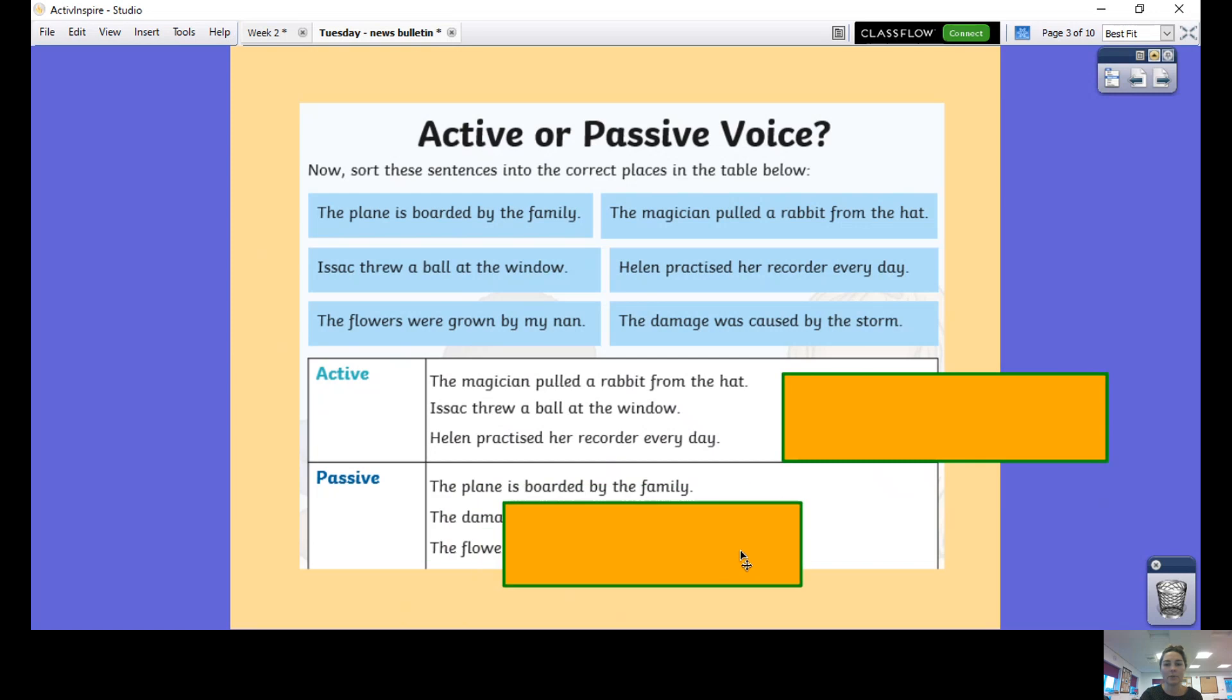Our passive examples were: the plane is boarded by the family. The damage was caused by the storm - if it was the other way around, if that was active, it would be 'the storm caused the damage' but we've got the damage at the front, 'was caused by the storm.' And the flowers were grown by my nan. Well done if you got those correct. If you didn't, please don't worry, we will go over this again lots.